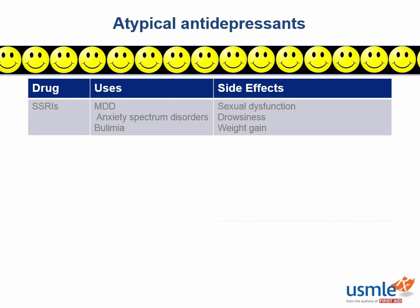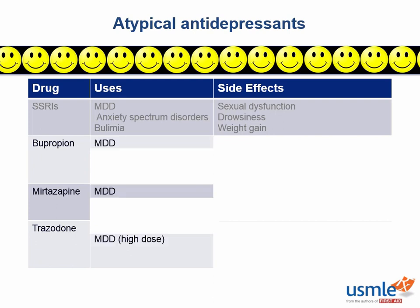The drugs we're going to compare and contrast are bupropion — which is not the same as buspirone — mirtazepine, and trazodone. They all have in common that they're used to treat major depressive disorder, but trazodone is actually a lousy antidepressant. It only has antidepressant effects at really high doses, and even then they're not very good ones.